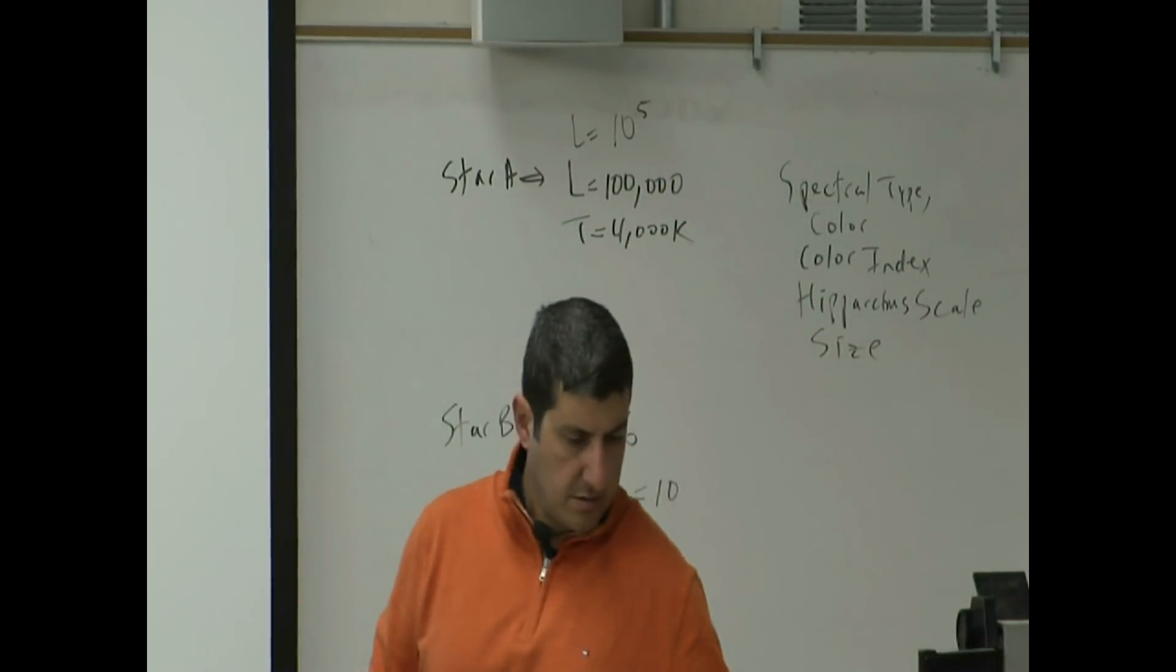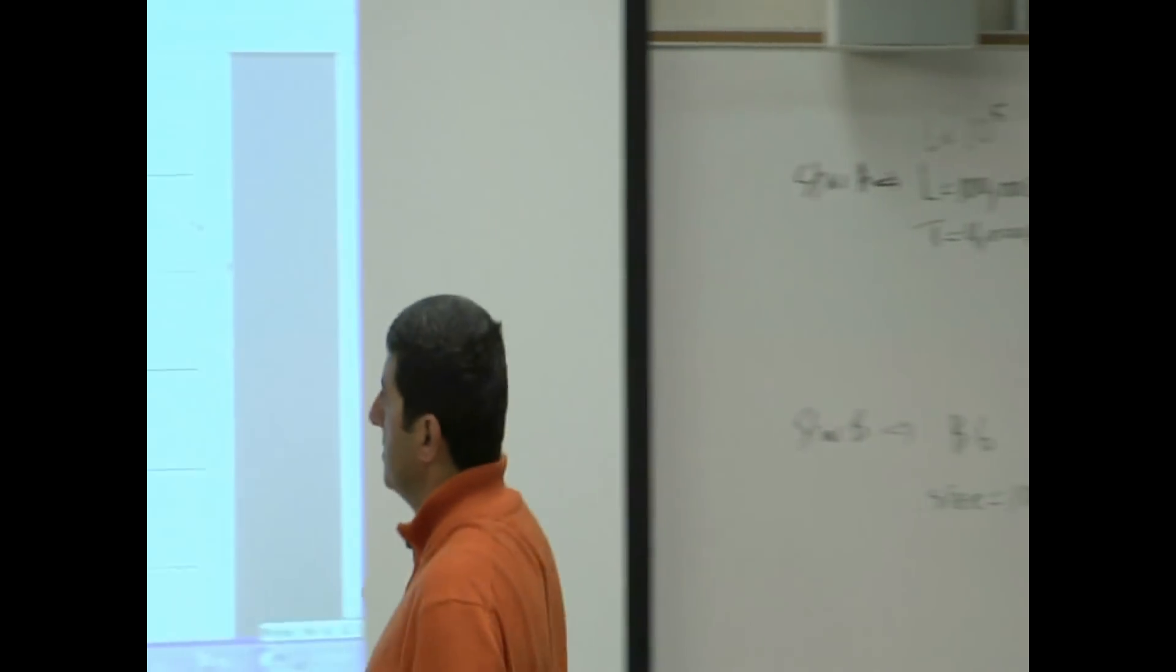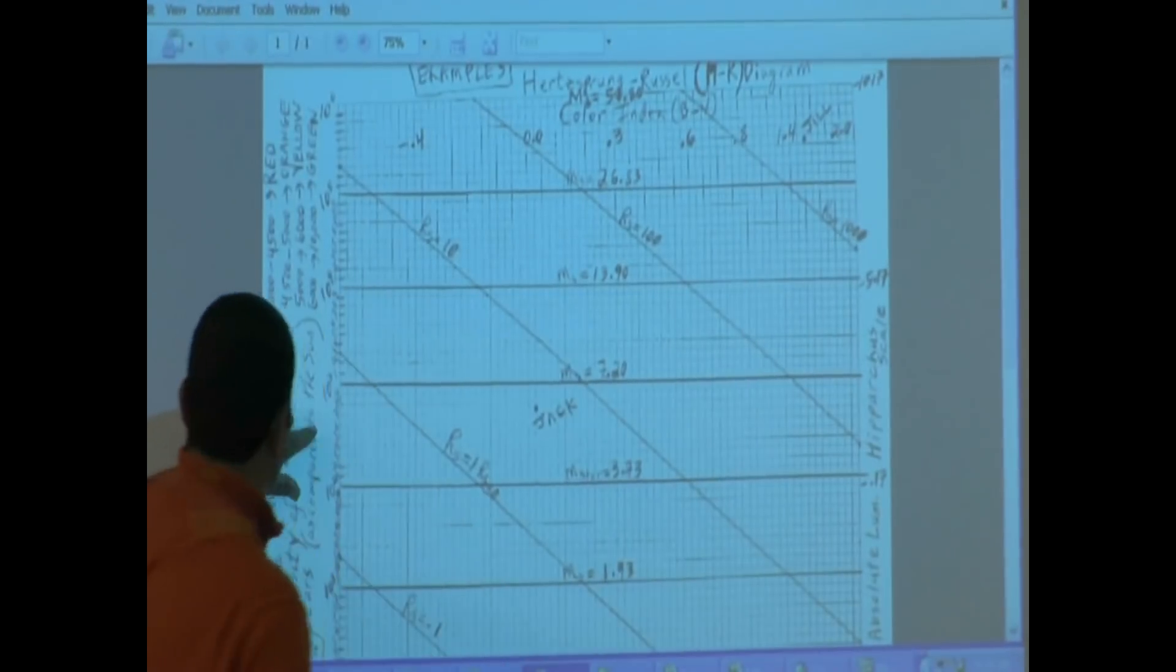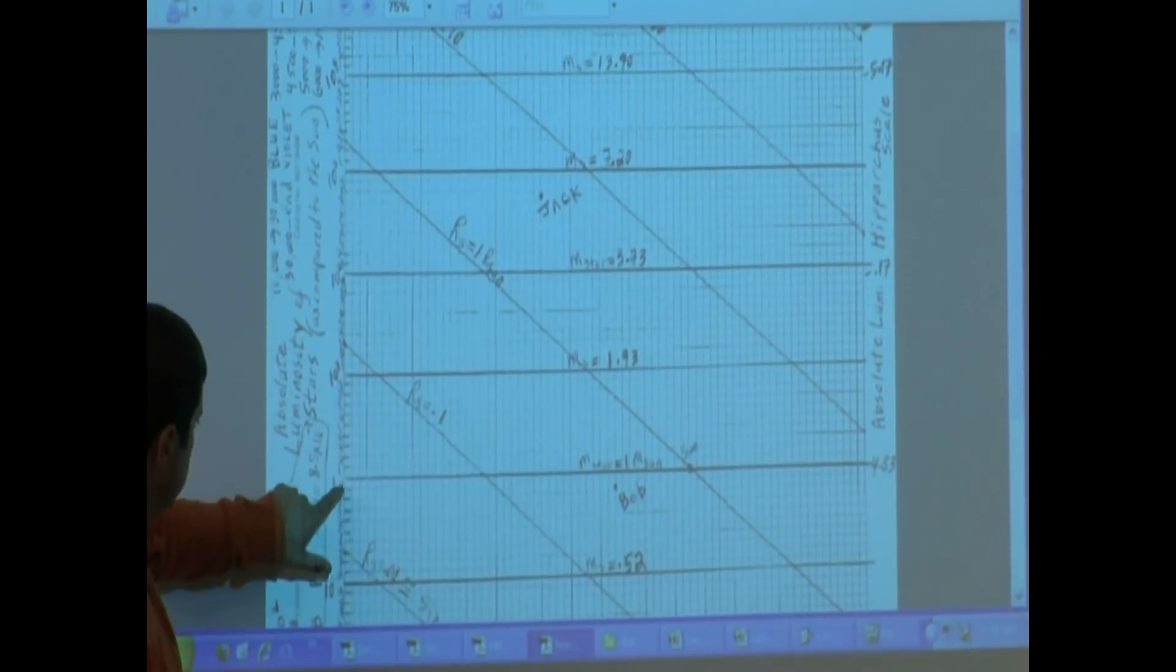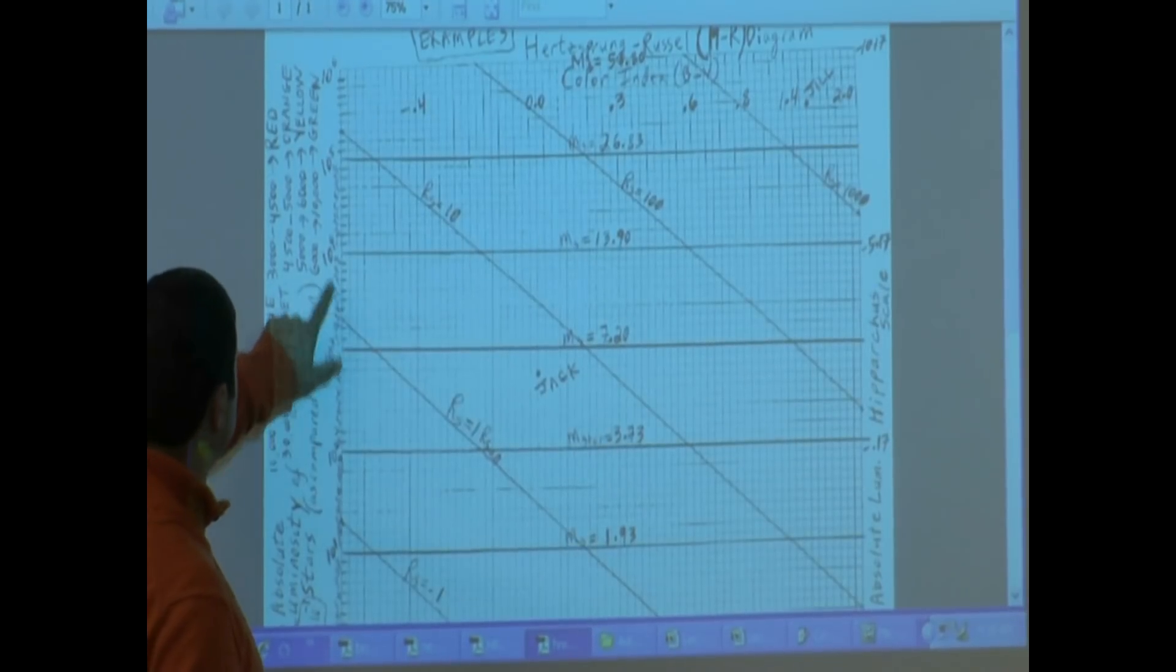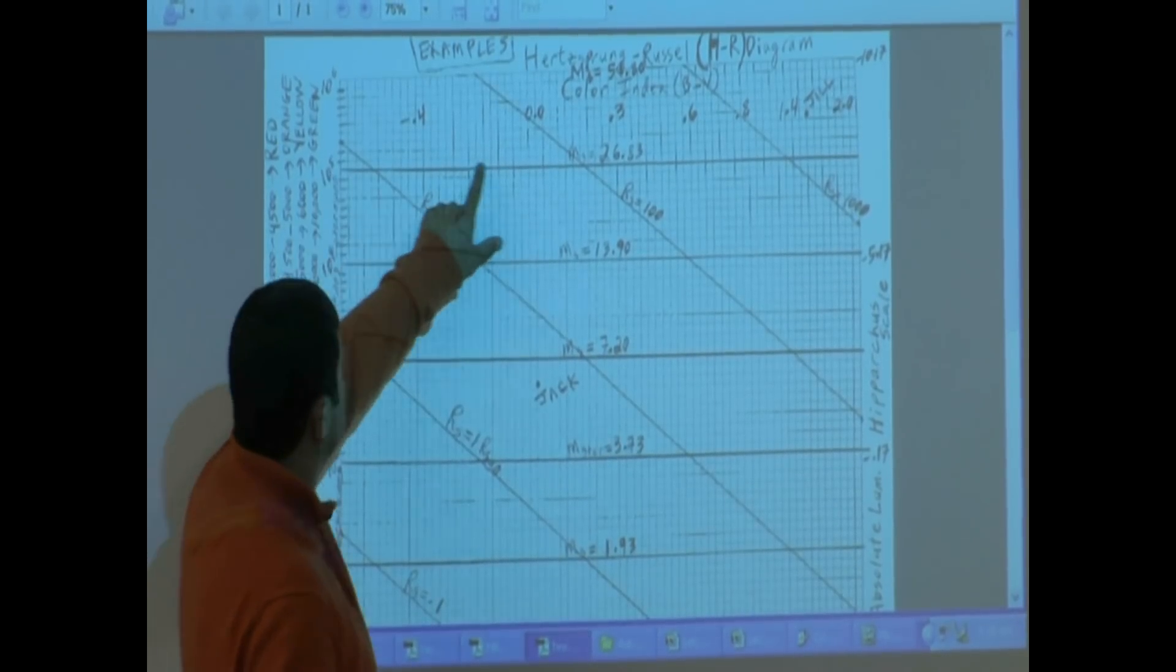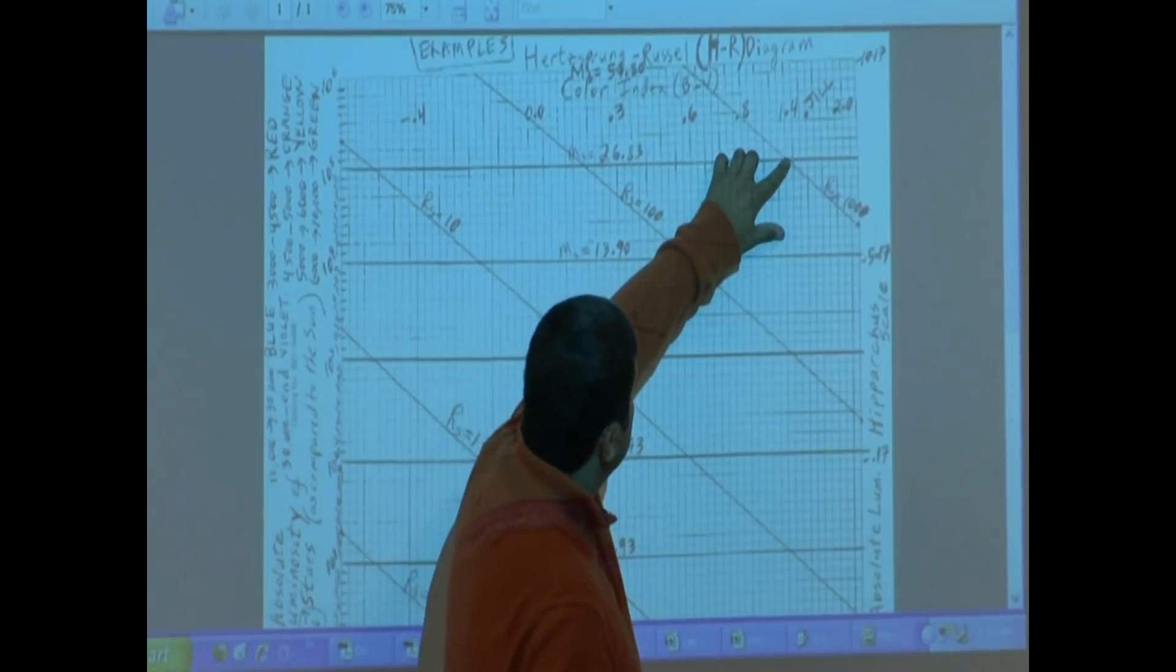Where would that go? See here, the luminosity. See one, ten to the one, ten to the second, ten to the third, ten to the fourth, ten to the five. Go over there.